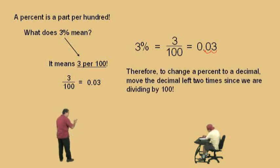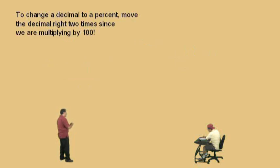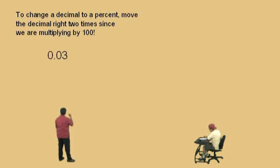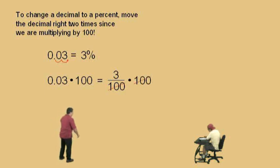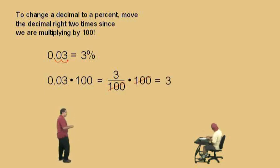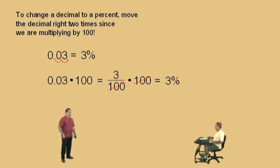So therefore, to change a percent to a decimal, Charlie, move the decimal left 2 times since you're dividing by 100. That's going from a percent to a decimal. So what happens, Charlie, when we go from a decimal to a percent? Move it to the right 2 times. That's right, we move it to the right 2 times since we're multiplying by 100. So here's our decimal, 0.03 — we're going to multiply by 100, so we move it to the right 2 times, and we get 3%. To change a decimal to a percent, move it to the right. To go from a percent to a decimal, move it to the left. Go home and write a rap song or something — that'll help you remember this.